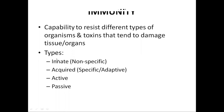Now, the types of immunity. There are two types of immunity. Innate immunity, which is non-specific — it is present since birth. And acquired immunity, which is developed after birth and requires specific exposure to the antigen. It can be active or passive, and we will discuss it later.